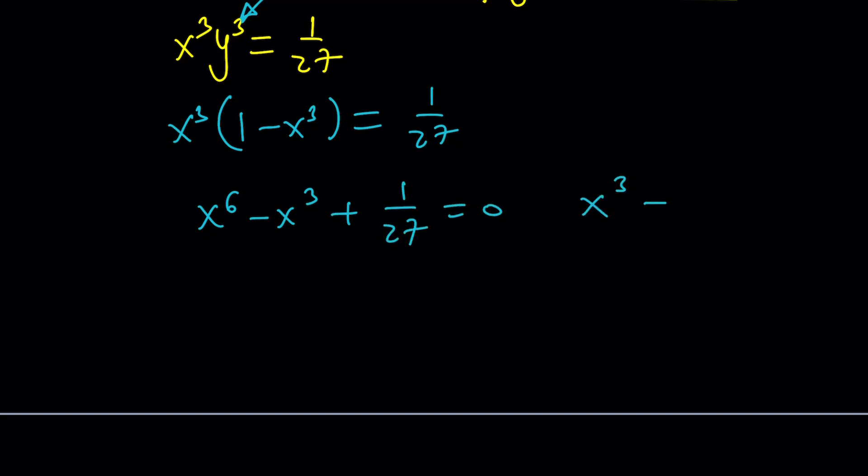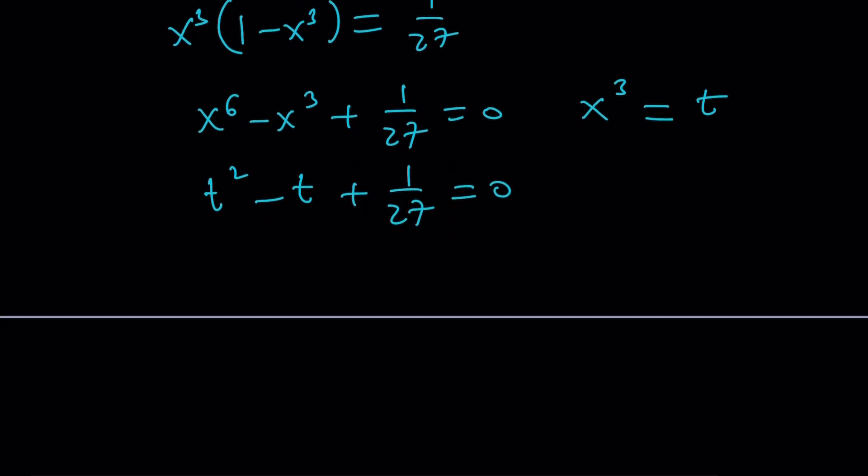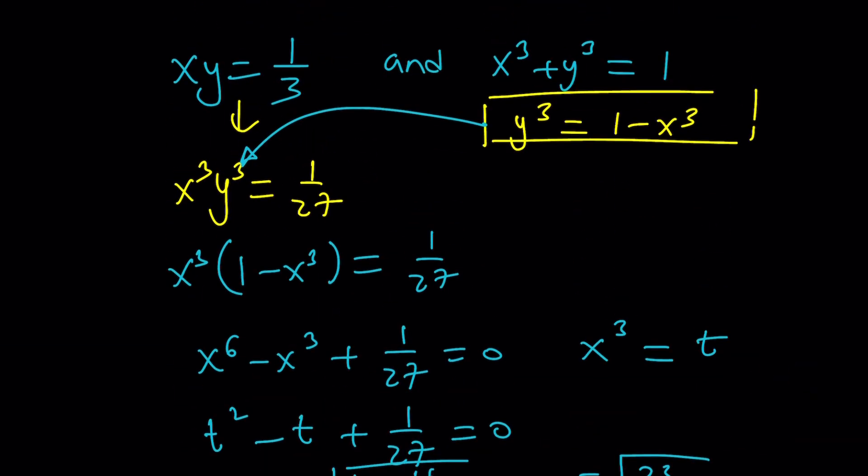Now replace x cubed with something like t, and then you're going to get a quadratic equation. Very easy to solve because we have a formula. The formula says t equals negative b plus or minus the square root of b squared, which is 1 minus 4 over 27, which is going to be a pretty interesting number: 1 plus or minus the square root of 23 over 27 all over 2. So those are the t values, but you've got to remember t is x cubed, and there are two t values, which means one of them is x cubed, the other one is y cubed, because x cubed and y cubed are the roots of this equation.